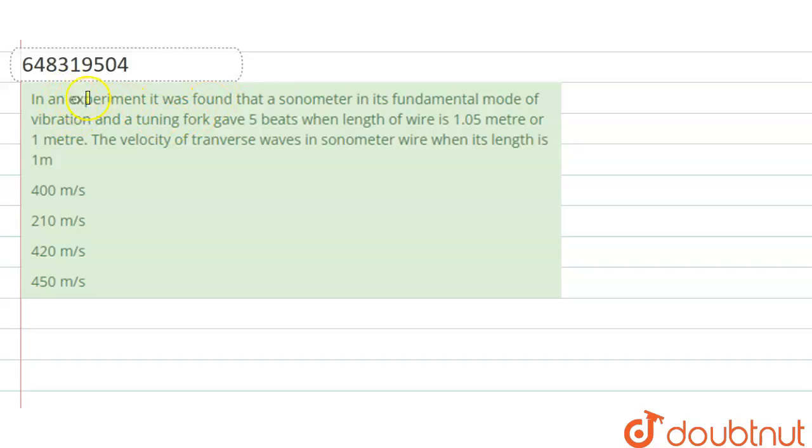In an experiment it is found that a sonometer in its fundamental mode of vibration and a tuning fork gave five beats when the length of wire is 1.5 meter or one meter. The velocity of transverse wave in sonometer when its length is one meter.